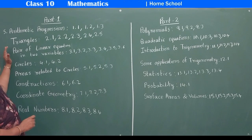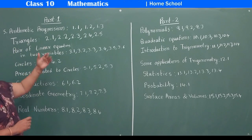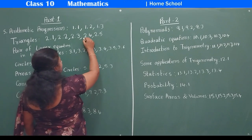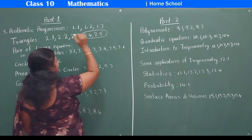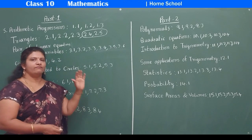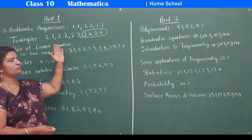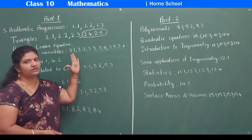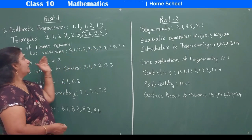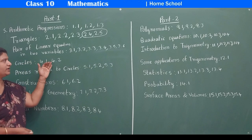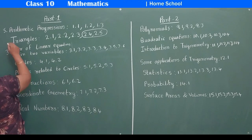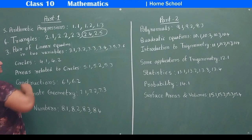Coming to the next chapter: Triangles. In Triangles, we had five exercises. This year, exercises 2.4 and 2.5 are deleted. Coming to theorems, the Basic Proportionality Theorem and Ratios Theorem are there, but other theorems — Pythagoras and all — are not there. Coming to the next chapter, Pair of Linear Equations in Two Variables, which is the third chapter. Triangles is now the sixth chapter, so the chapter numbering has also varied this year.